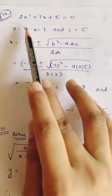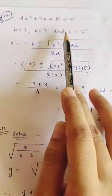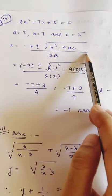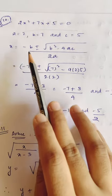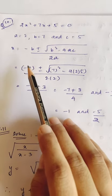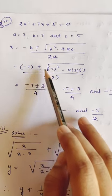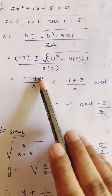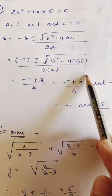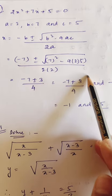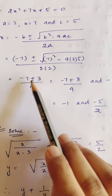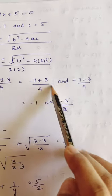Second formula example: a = 2, b = 7, c = 5. Substituting into the formula: x = (-7 ± √(49 - 40)) / 4 = (-7 ± √9) / 4 = (-7 ± 3) / 4. This gives (-7 + 3)/4 = -4/4 = -1, and (-7 - 3)/4 = -10/4 = -5/2. So x = -1 or x = -5/2.